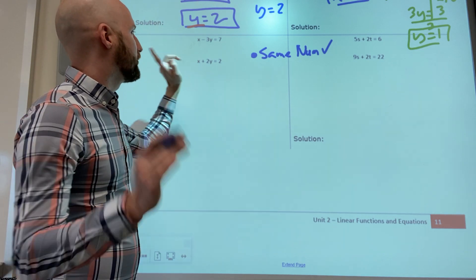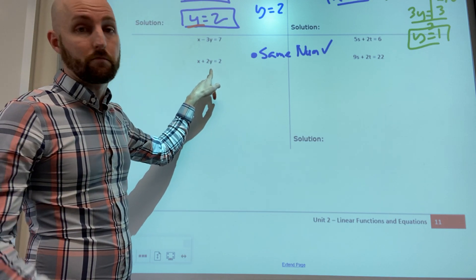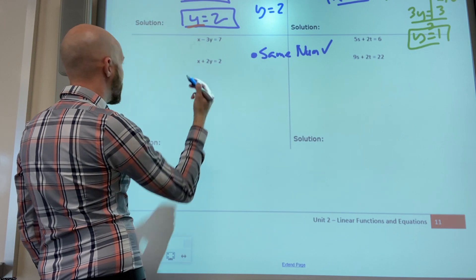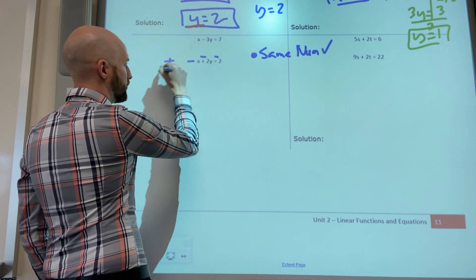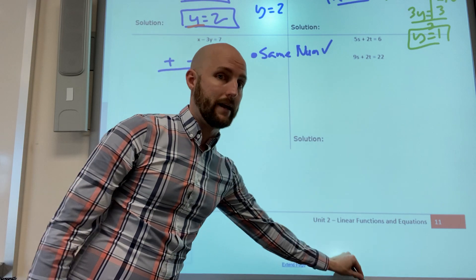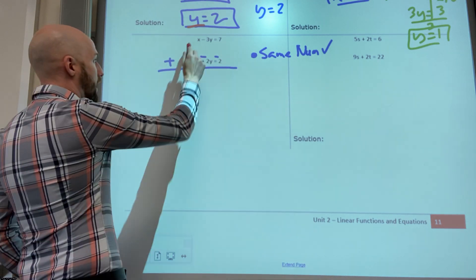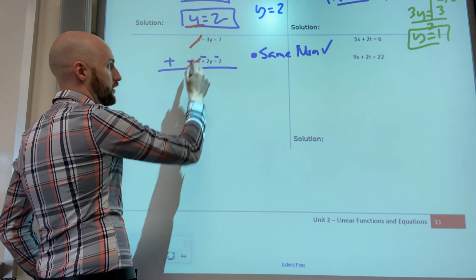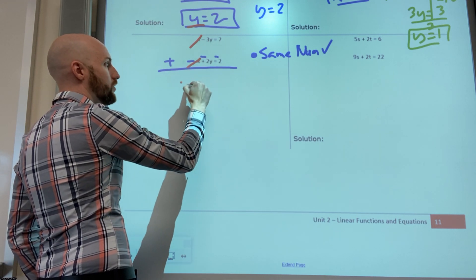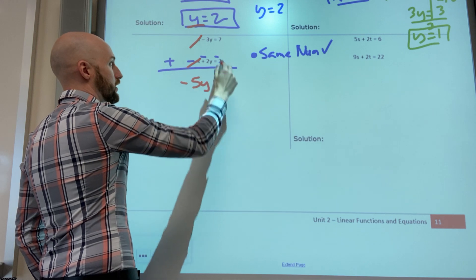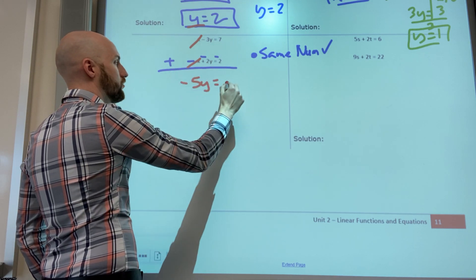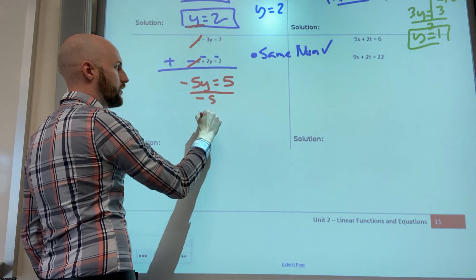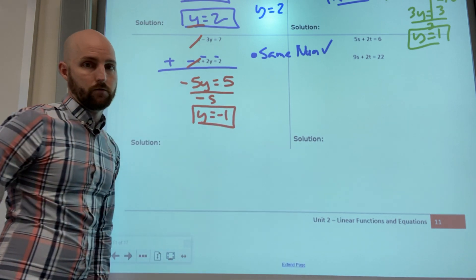So I'm going to make todos son positivos ahora todos son negativos. Combine: x plus negative x elimination, negative three plus negative two is negative five, seven plus negative two is positive five, divide by minus five, y is negative one.